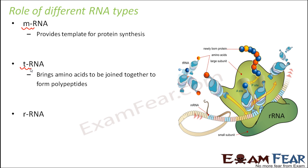The third type is rRNA, or ribosomal RNA. This is important during translation, that is when the actual process of protein synthesis takes place. Both mRNA and tRNA bring in the raw material — messenger RNA brings in the sequence from DNA and tRNA brings in the amino acids — but where exactly the process of translation takes place, that role is performed by ribosomal RNA, because protein synthesis takes place in ribosomes and rRNA is present in the ribosomes.